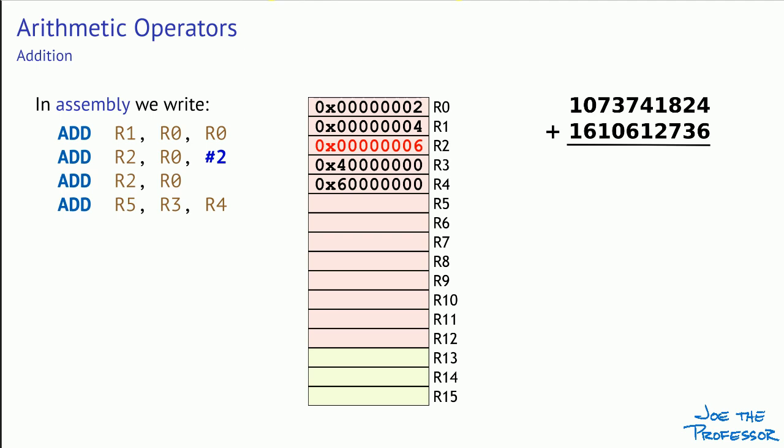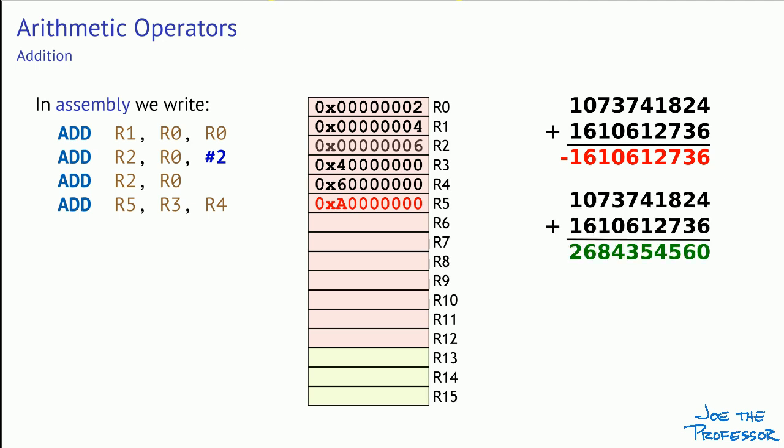If we start to work with really large numbers, we can run into the sheep counting problem. Suppose we add two numbers, one of which is about 1 billion and the other about 1.6 billion. If we interpret the result as a signed two's complement value, then the result is incorrect — we added two large positive numbers and got a negative result. But if we interpret the result as an unsigned value, then the result is correct. So how does the processor know whether you are adding signed or unsigned values? It doesn't. Only you, the programmer, know how to correctly interpret the results. The processor just does what it always does, and if the result is pure nonsense, then it's the programmer's fault.